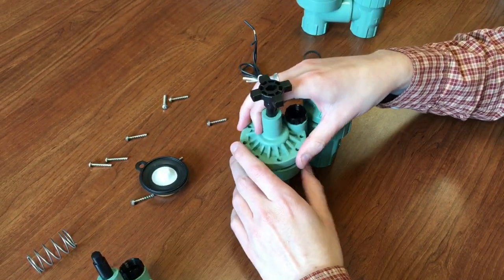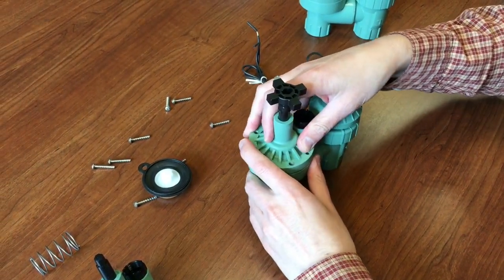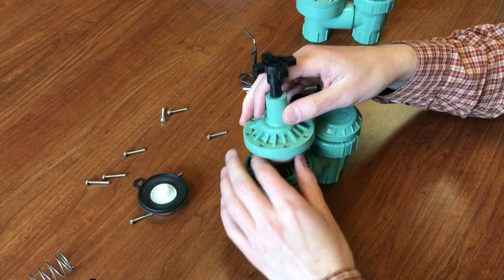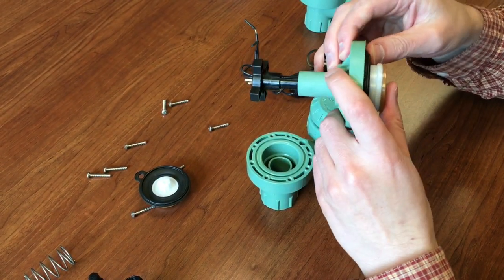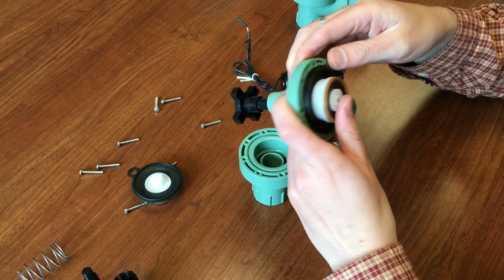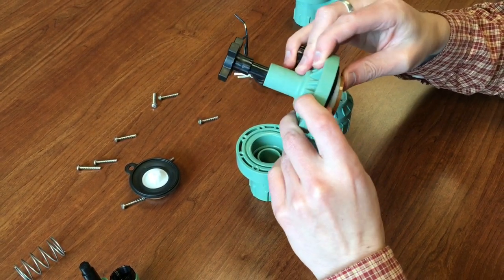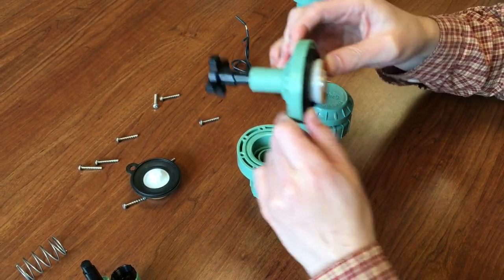So putting it back together is just basically the exact same process as we used to pull it apart. Pretty simple, and then give it a test, turn your water back on, and you should see that it's working leak free.